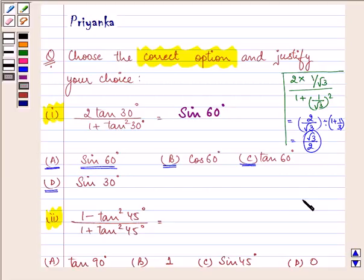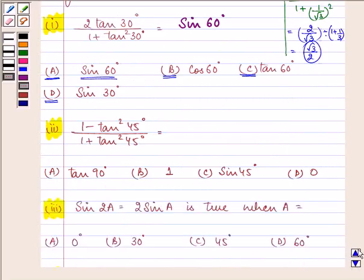Now in the same manner we will be proceeding with the rest of our parts. Now here we have the second part. 1 minus tan square 45 degree upon 1 plus tan square 45 degree. We know that the value of tan 45 degree is 1.